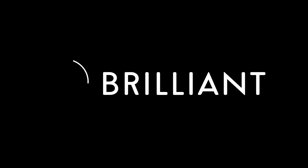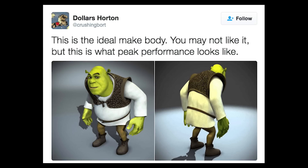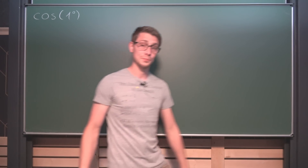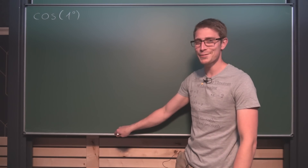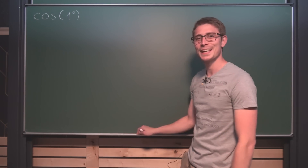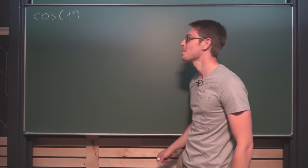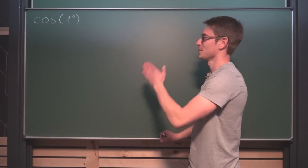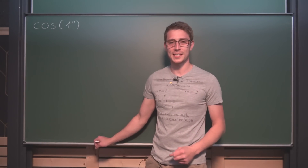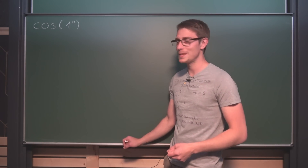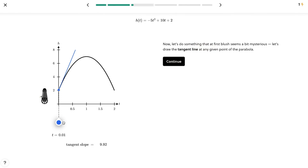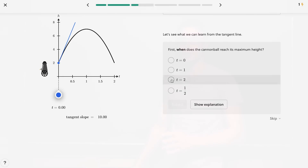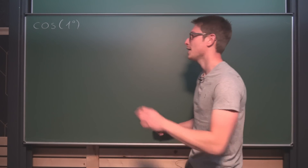A huge thanks to Brilliant for sponsoring this video. Cosine of one degree — try it out for yourself, and if you're done, keep watching for the solution. Spoiler alert: the solution looks a bit disgusting. Let us dive right in. This video is sponsored by the wonderful people over at Brilliant. You can find a lot of mathematics, physics, and other courses on their website. More information at the end of the video.